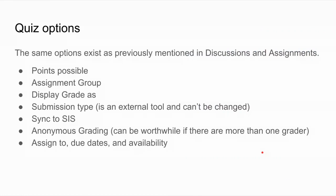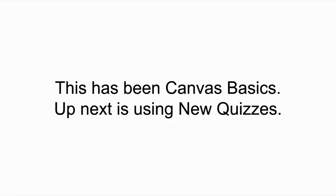As you go through quiz options, you'll notice a lot of the same things we saw for graded discussions and assignments: points possible, assignment group, display grade as, and submission type — which is an external tool that can't be changed. The sync to SIS option is there, anonymous grading is a newer feature worth considering if there are multiple graders. At the end you'll see assigned to, due dates, and availability, just like everywhere else. Thank you for paying attention — please re-watch as many times as you need. This has been Canvas Basics, and coming up next will be New Quizzes. Thanks and have a great day.